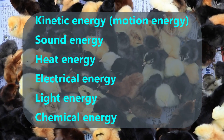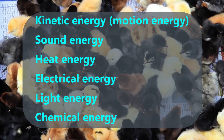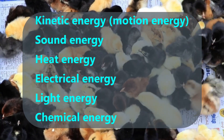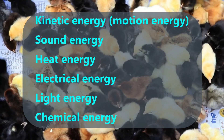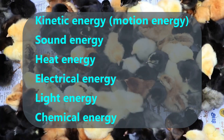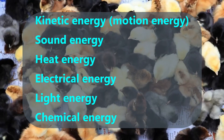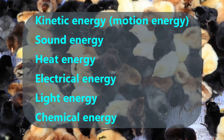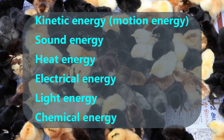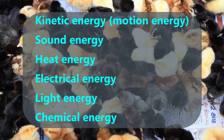In elementary school, we learn about six forms of energy: motion energy, which we call kinetic energy; sound energy; heat energy; electrical energy; light energy; and chemical energy. We will give a few examples of each of these and then show how each type of energy can be converted from one form to another form.